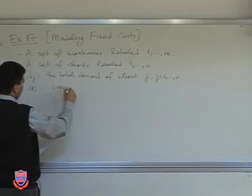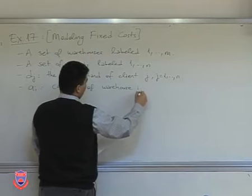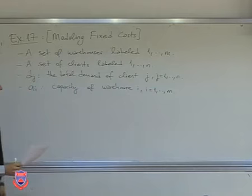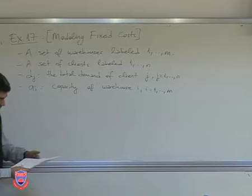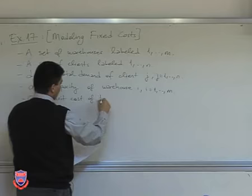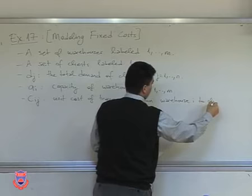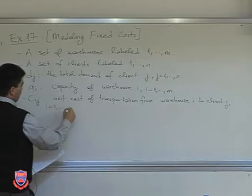ai denotes the capacity of warehouse i, where i goes from 1 to m. Each warehouse has a certain capacity: the first has capacity a1, the second a2, and so on. Then we have cij, the unit cost of transportation from warehouse i to client j, where i goes from 1 to m and j goes from 1 to n.